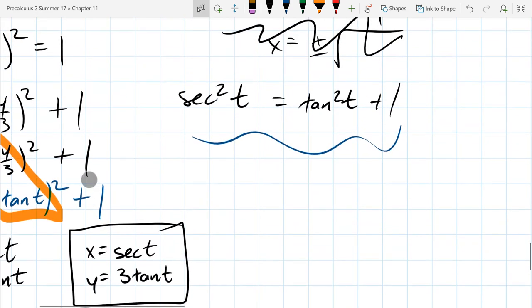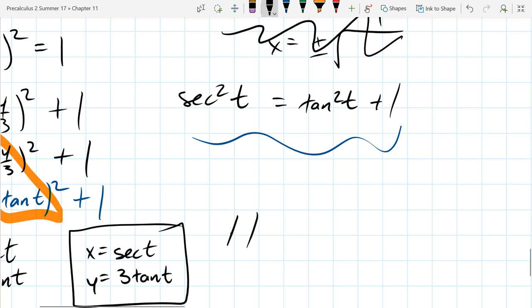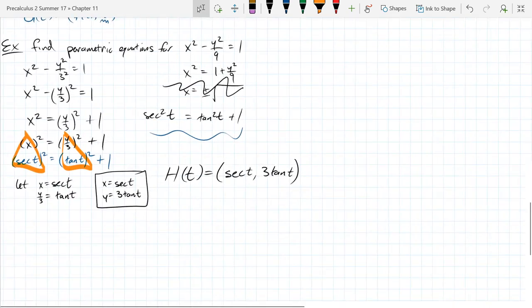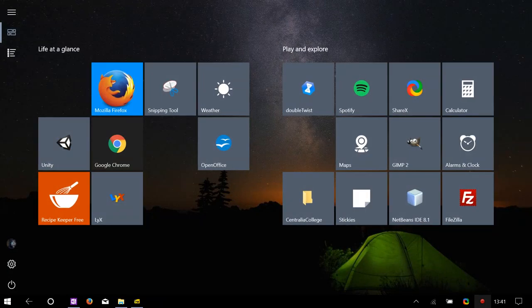And of course, how do we write this? If we want to go into a function form. h of t, x goes first, secant t, and then 3 tangent t. So that would be parametric function notation right there.